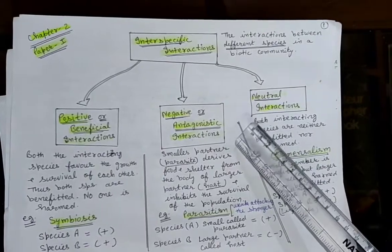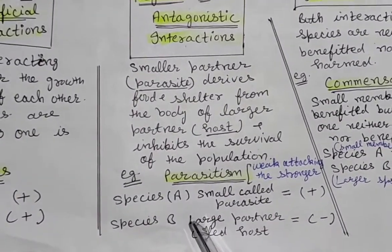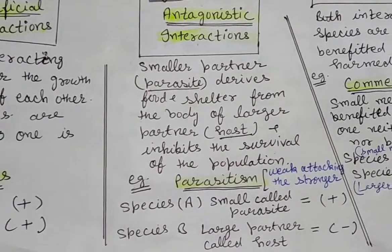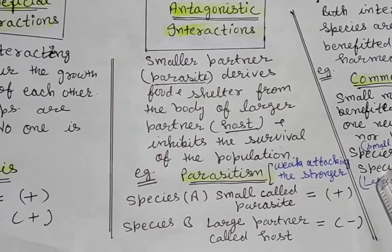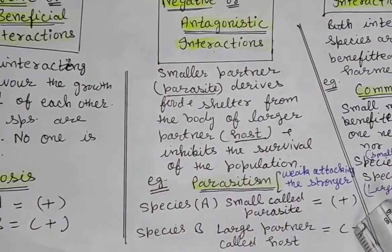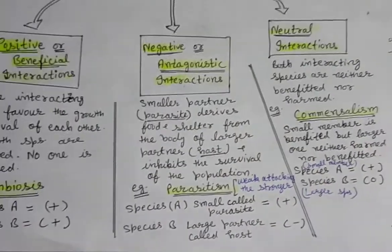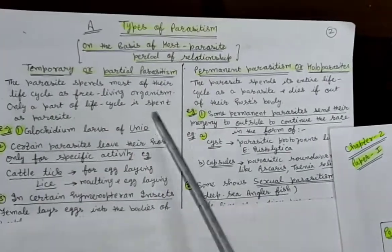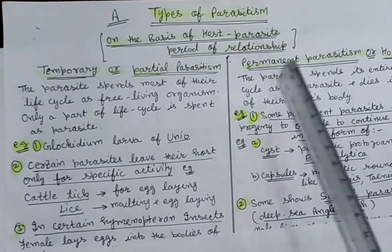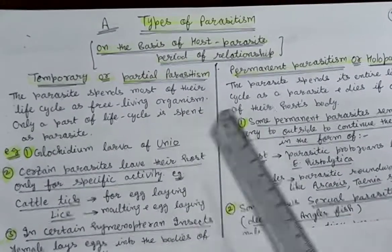Parasitism is a type of negative or antagonistic interaction in which the small organism, known as the parasite, is benefited, whereas the larger partner, which is the host, is always harmed. The weak parasite attacks the strong host. Negative means the partner is harmed; positive means the partner is benefited. We also studied the types of parasitism based on the host-parasite period of relationship: temporary and permanent. For these two types, refer to our previous video.